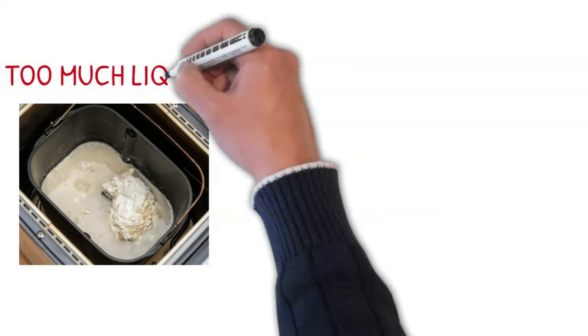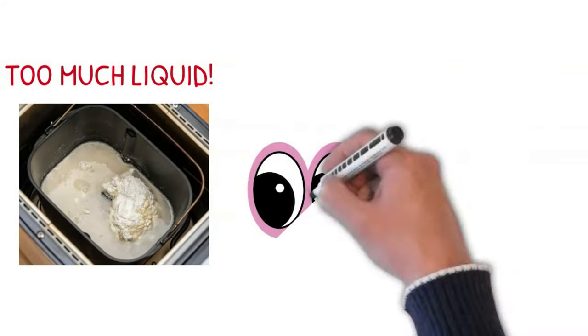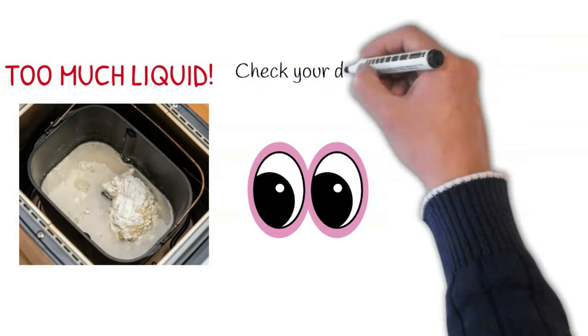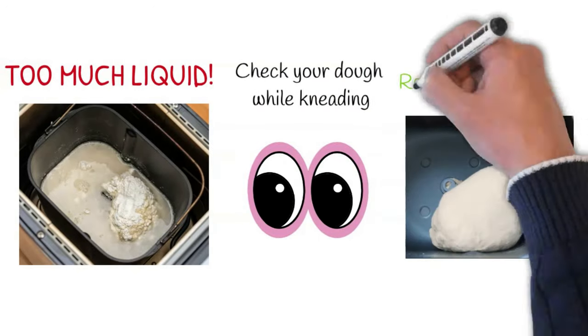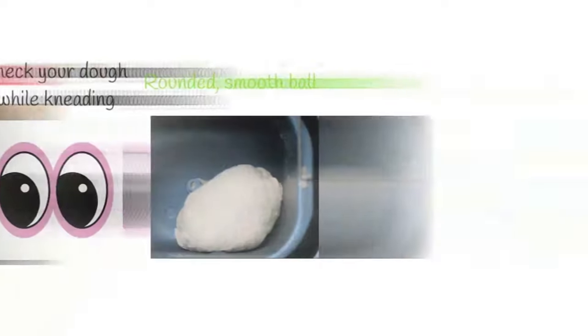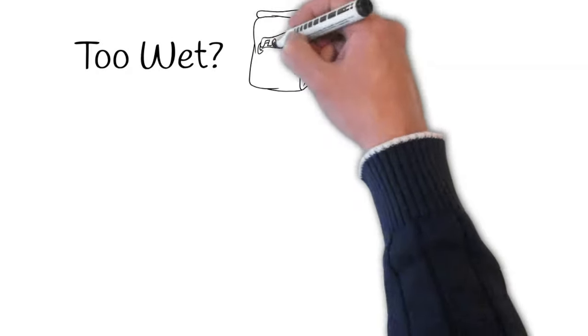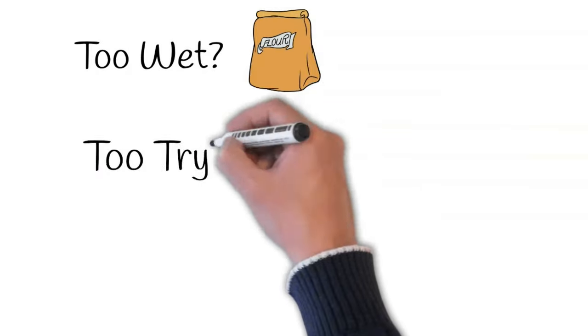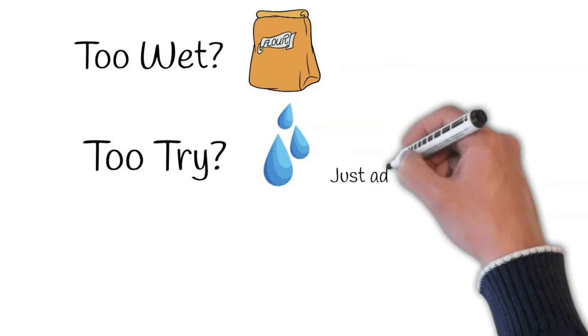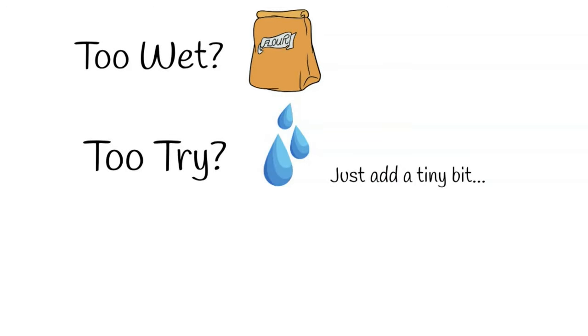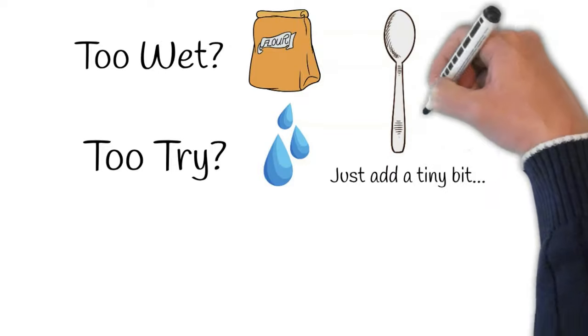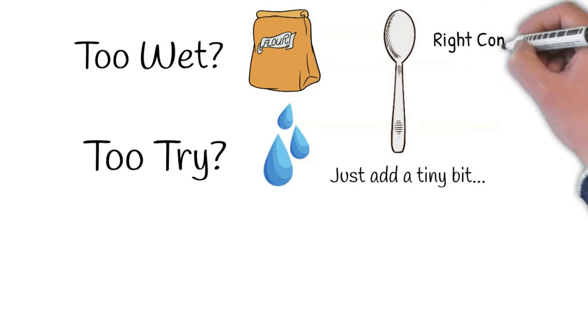The next most common culprit that could make the loaf collapse is too much liquid in your dough. Going back to the first point in this video, check your dough while kneading. Your dough should be a rounded, smooth ball. If it looks too wet, add flour. If it seems too dry, add water. Just add a tiny bit. A teaspoonful will be enough most of the time or until you achieve the right consistency.